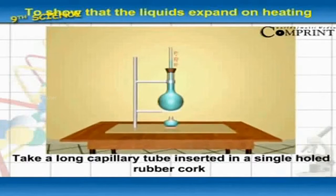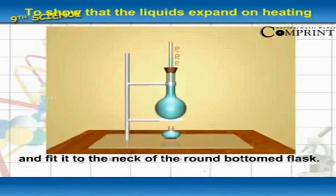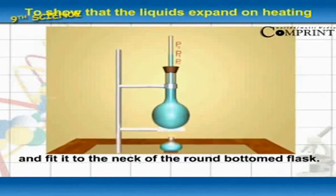Take a long capillary tube inserted in a single hole rubber cork and fit it to the neck of the round bottom flask.